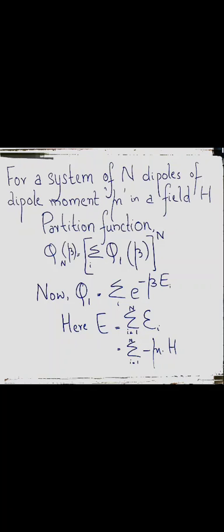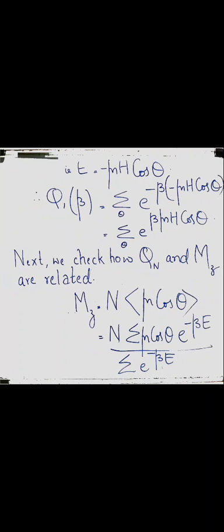Our work is to calculate the partition function of a single dipole: Q_1 = sum over theta of e^(-beta * epsilon_i), where the energy is epsilon_i = -mu · H, the potential energy of a dipole moment mu in magnetic field H. So epsilon_i = -mu*H*cos(theta), and Q_1(beta) = sum over theta of e^(beta * mu * H * cos(theta)).